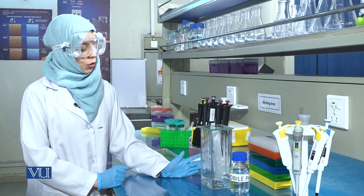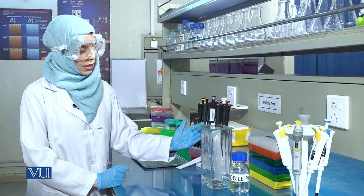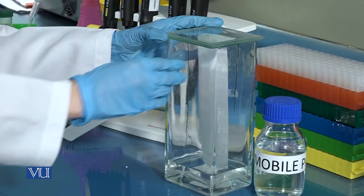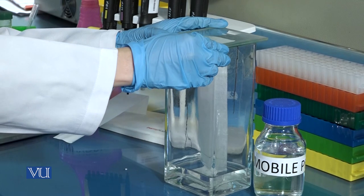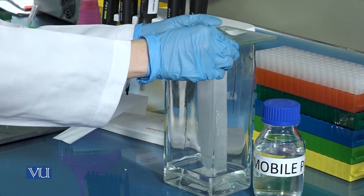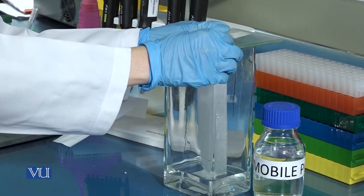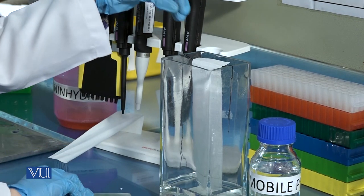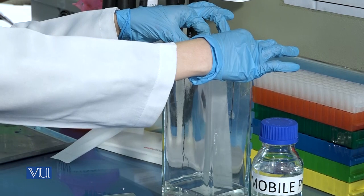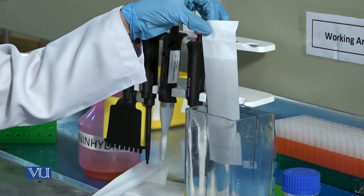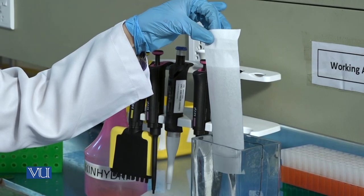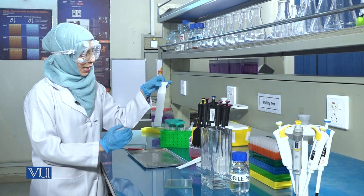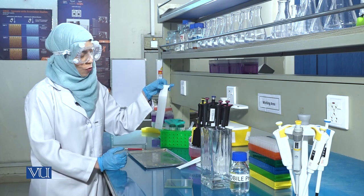After about 60 minutes, you will observe that the solvent has risen to approximately two-thirds the length of the filter paper. At this stage, carefully remove the filter paper from the chromatography tank. Allow the chromatogram to dry completely in the air before moving on to the next step.